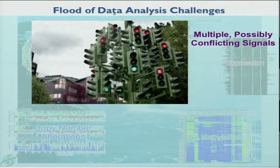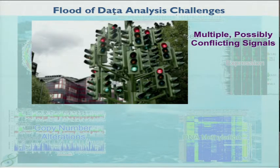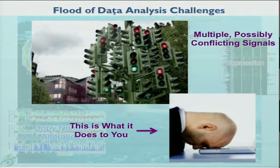More importantly, when you're thinking about a gene and trying to figure out what's going on — is it active, is it not active — you've got all these different pieces of data telling you different things. You feel like you're at a stoplight and you don't know whether to go or not. This is your brain on all these types of data.